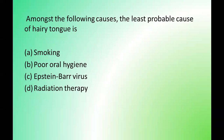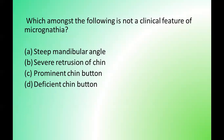Next question: which amongst the following is the least probable cause of hairy tongue? Options are: smoking, poor oral hygiene, Epstein-Barr virus, radiation therapy. The correct answer is option C — Epstein-Barr virus. Next question: which amongst the following is NOT a clinical feature of micrognathia? Options are: steep mandibular angle, severe intrusion of chin, prominent chin button, deficient chin button. The correct answer is option C — prominent chin button.